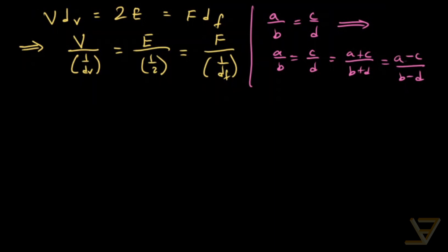So what that allows us to do is write this as V minus E plus F over 1 over DV minus 1 over 2 plus 1 over DF.